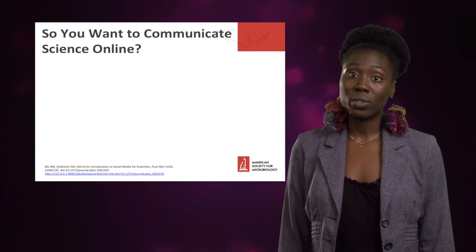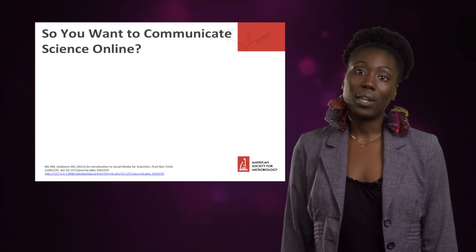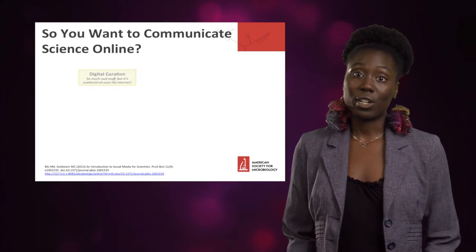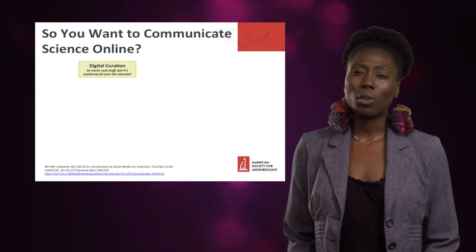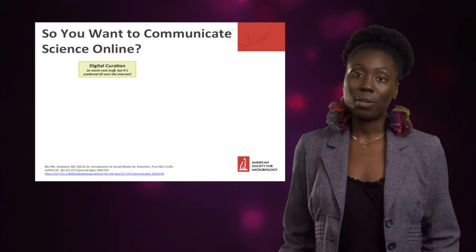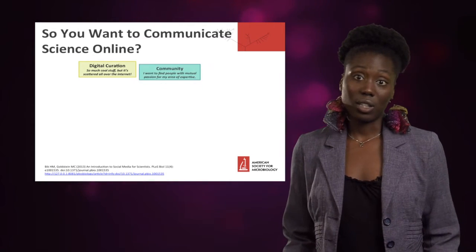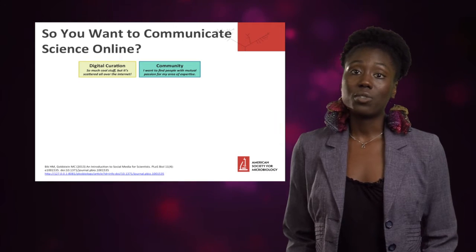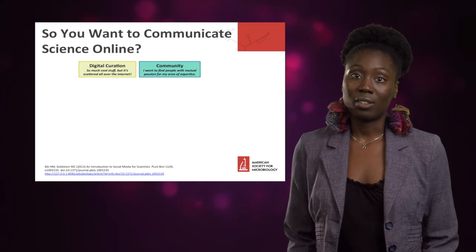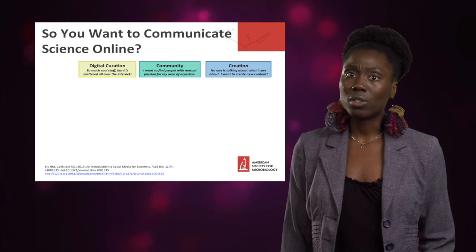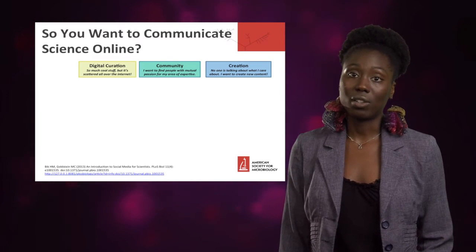Hopefully by now you're excited about communicating your science online. We want to think about our goals. There are three main goals you may have when communicating your science online. Digital curation — there are so many cool things out there and you want to gather them and put them all in one place. Community — you want to find the people who are interested in the science that you're interested in. And creation — you don't see the science that you're interested in out there and you want to put new content online.